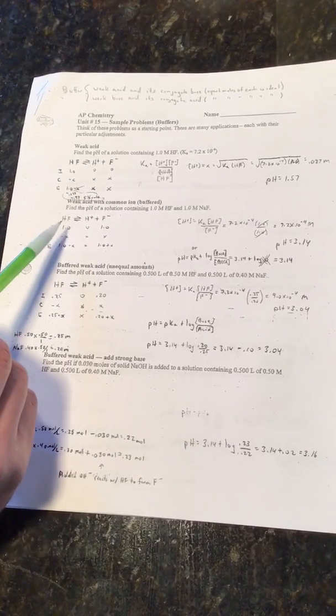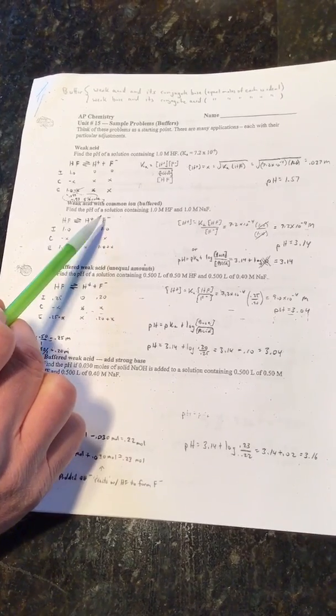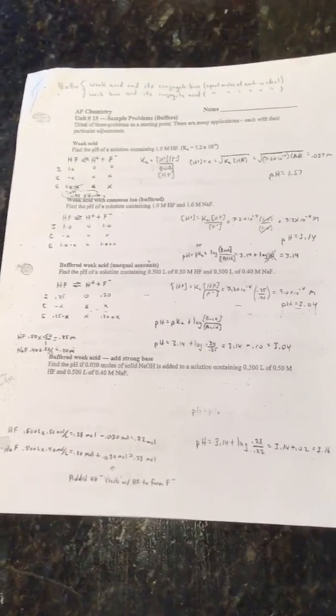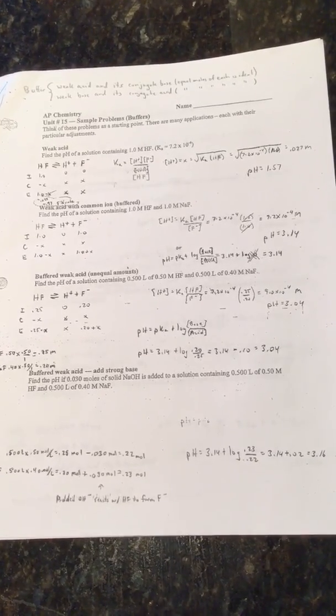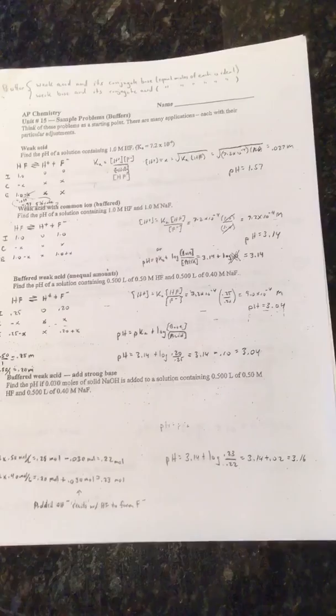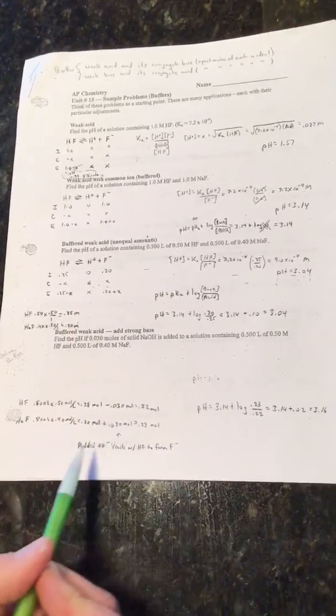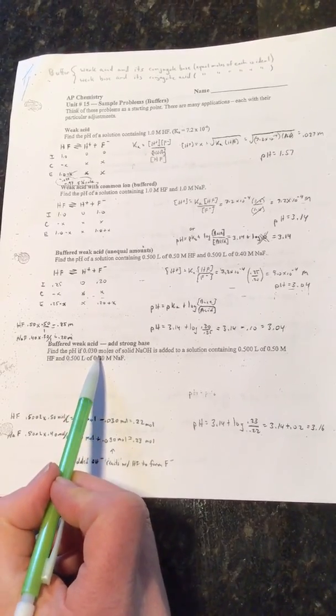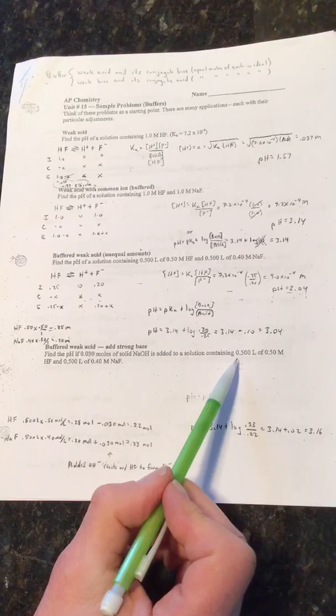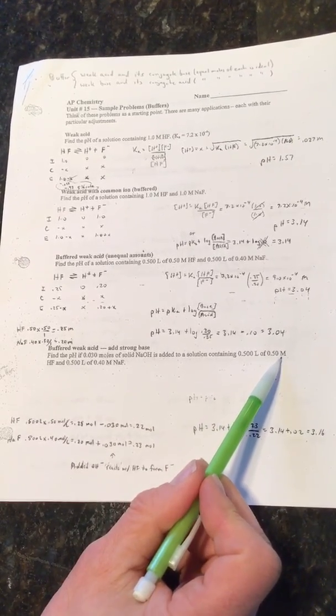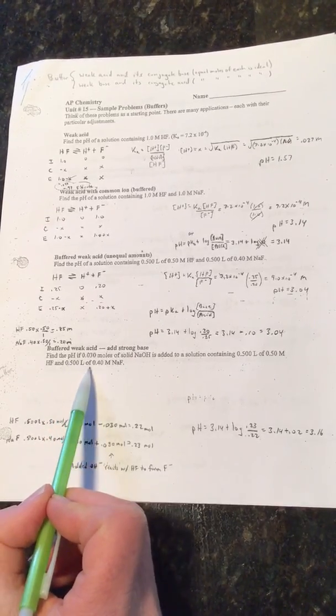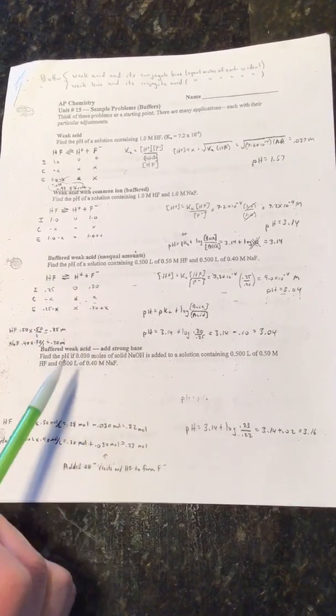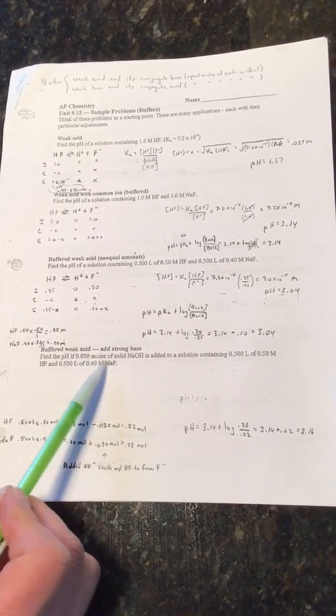So a buffer is a weak acid and its conjugate base. How does adding a strong acid or strong base affect this? We are back from letting out the dog. Okay, so here it says, find the pH when 0.030 moles of NaOH is added to a solution containing 0.500 liters of 0.50 molar HF and 0.500 liters of 0.40 molar NaF. So it looks just like the weak buffer solution we did before, except now we added some solid NaOH.